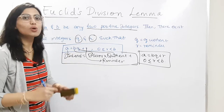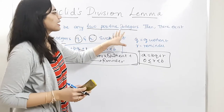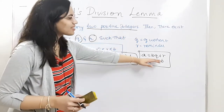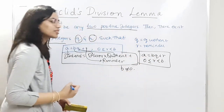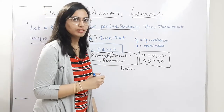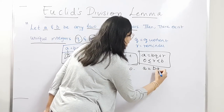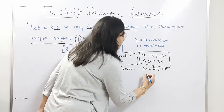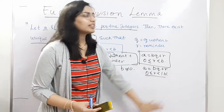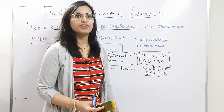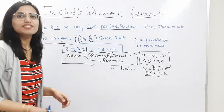This is the Euclid's division lemma, and it extends to all integers. When extended to all integers, we need to make sure that the divisor B is not equal to zero, because dividing a number by zero gives an undefined result. So for all integers, A = BQ + R still holds, but the condition becomes 0 ≤ R < |B|, so that if B is negative, it becomes positive under the modulus.